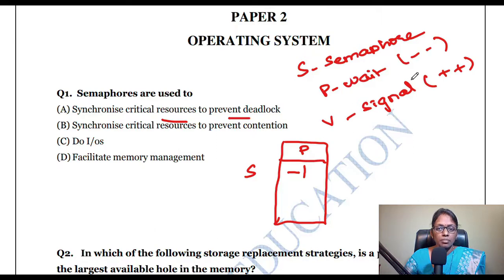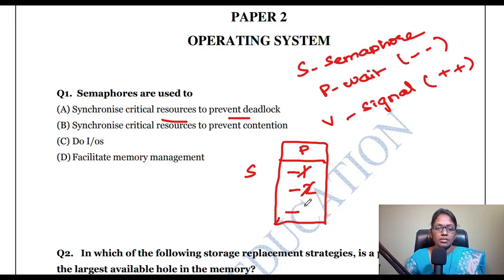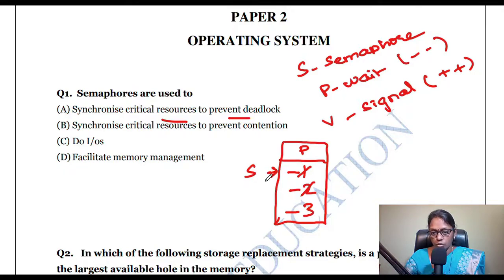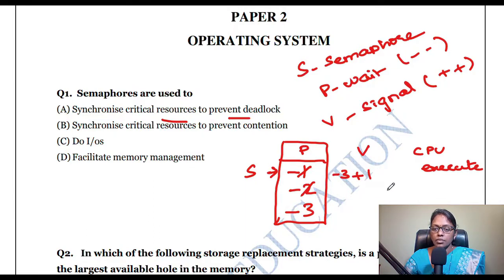If another person comes and waits, it becomes minus two. One more person comes — minus three. Three persons are waiting for the CPU, so the semaphore value is minus three. Now the CPU is going to execute — execute means signal, so I do plus one. Minus three plus one.